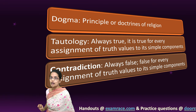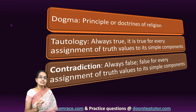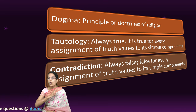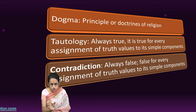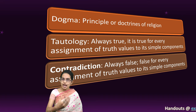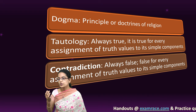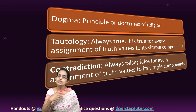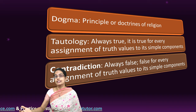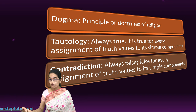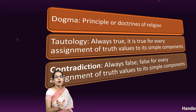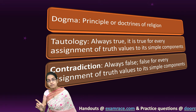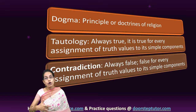Now, coming to the most interesting part, which is tautology. What is tautology? Tautology is always true — it is true for each and every assigned sub-component of it. A good example of tautology would be: Indira Gandhi was assassinated, or else she was not. This is an interesting example because it is a phrase or statement that is always true.